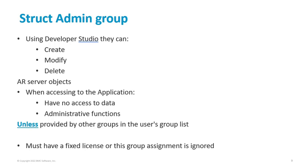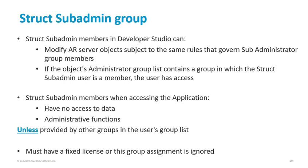Being part of the struct admin group requires a fixed license. Users assigned to the struct sub-admin group follow the same rules as the sub-administrator permissions group, but they don't have access to data or administrative functions, unless the user also belongs to a group which does have administrative access to the object. This role can work as a sub-administrator but adds the security of having no access to data, which may be restricted, and can also work with other users or teams in the organization with access to data to conduct testing exercises. It also requires a fixed license.